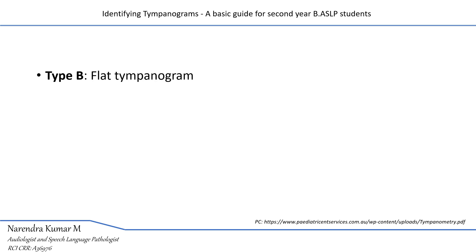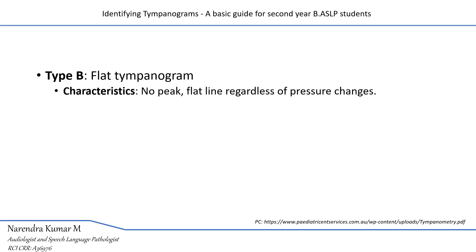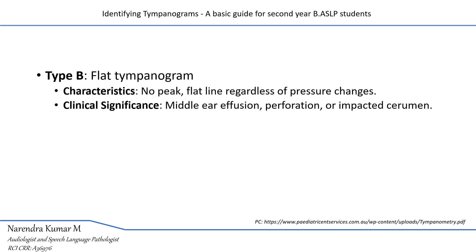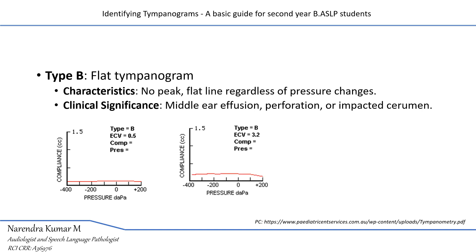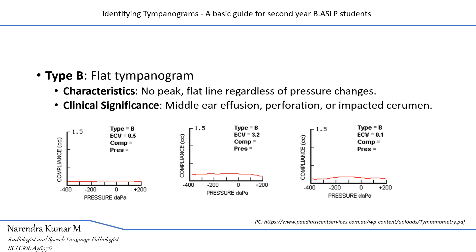Type B tympanogram indicates a flat tympanogram without any peak — there is virtually no compliance or peak pressure. It can be differentiated using ear canal volume. When ear canal volume is normal, type B suggests middle ear effusion. If the ear canal volume is extremely large, it indicates perforation of the tympanic membrane, since the volume measured includes both the ear canal wall and the middle ear. A flat tympanogram with reduced ear canal volume indicates impacted cerumen.